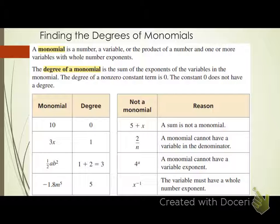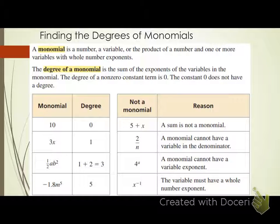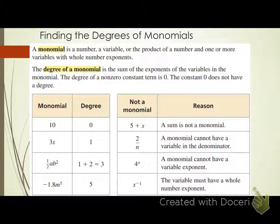The degree of a monomial is the sum of the exponents of the variables in the monomial. So I've got variables, I just add up the exponents of the variables — that's the degree of my monomial. The degree of a non-zero constant term is zero. A constant is a number without a variable. So if I just have a number that's not zero, the degree of that is zero. The constant zero does not have a degree.